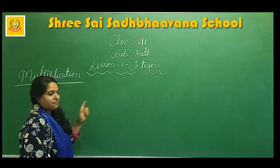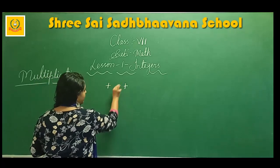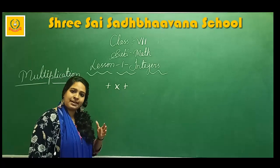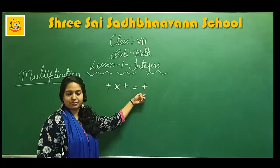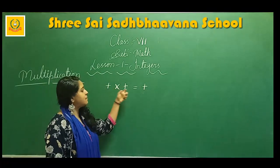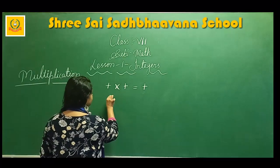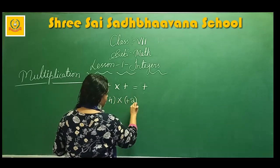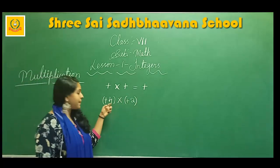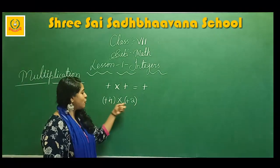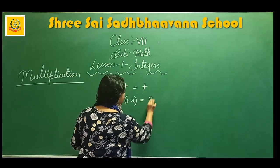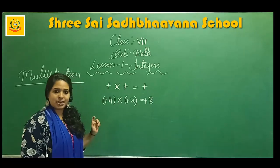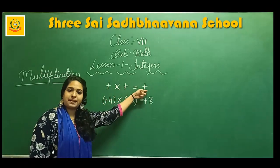Now let us see which sign to place before the product. First case: when there are two positive integers, you have to multiply the numbers as whole numbers and place the positive sign before the product. Example: positive 4 into positive 2. Multiply 4 and 2 as whole numbers — 4 twos are 8. Both signs are positive, so place the positive sign before the product.